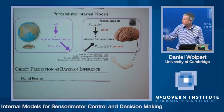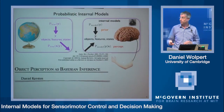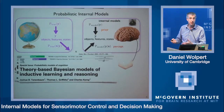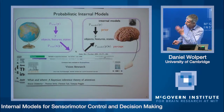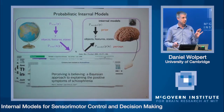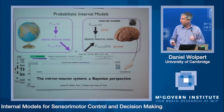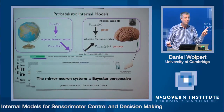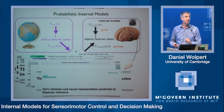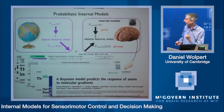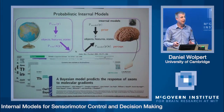For example, back ten years ago there was a nice review showing object perception is Bayesian inference. The way you perceive the world is Bayesian. We wrote reviews showing sensory motor control can be explained in a Bayesian framework. Josh Tenenbaum has shown very nicely with Tom Griffiths that inductive learning and reasoning are Bayesian. Attention: Bayesian inference theory of attention. Schizophrenia is a Bayesian disease. Mirror neurons — they're Bayesian as well. Humans are Bayesian, but surely animals can't be — owls' behavior predicted by Bayesian inference. And even neurons: a Bayesian model predicts the response of axons to molecular gradients. Everything is Bayesian.